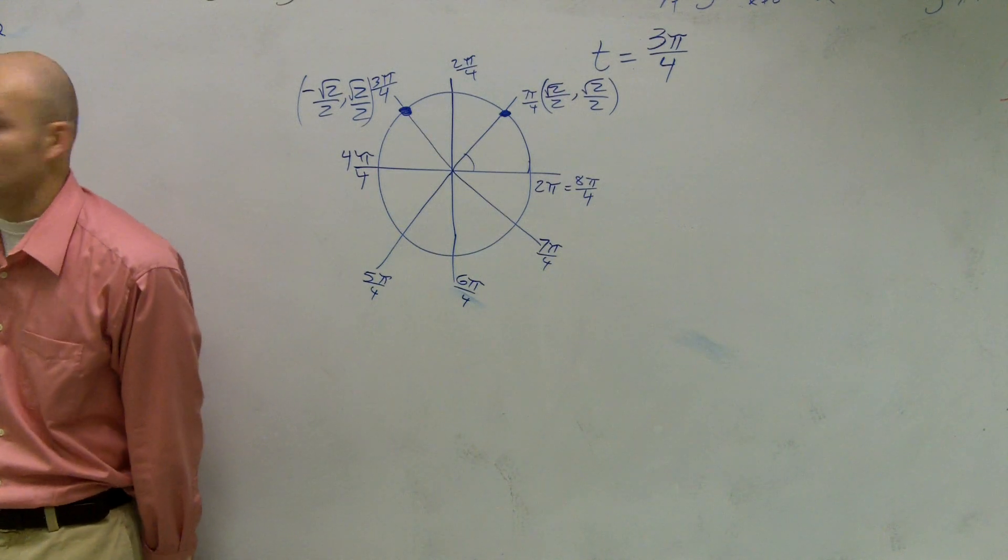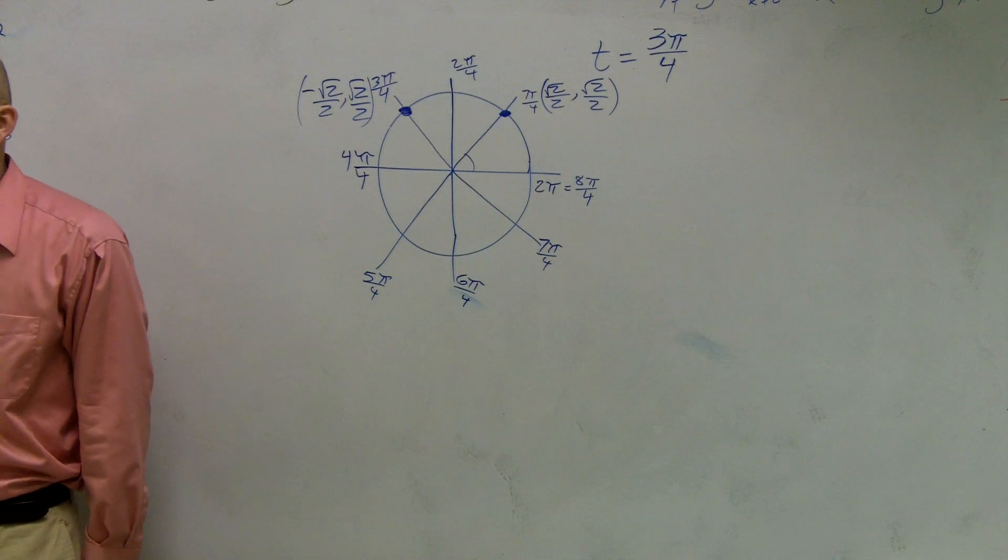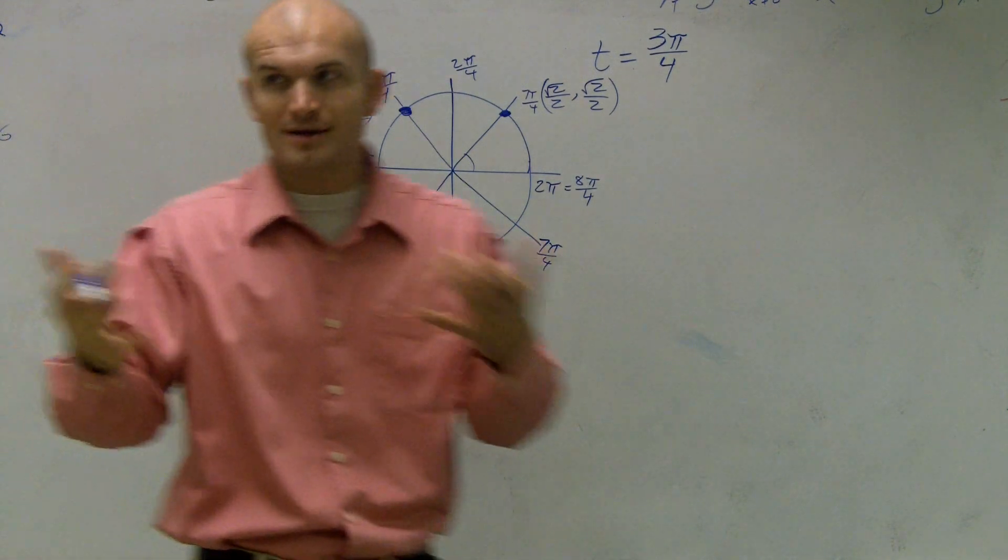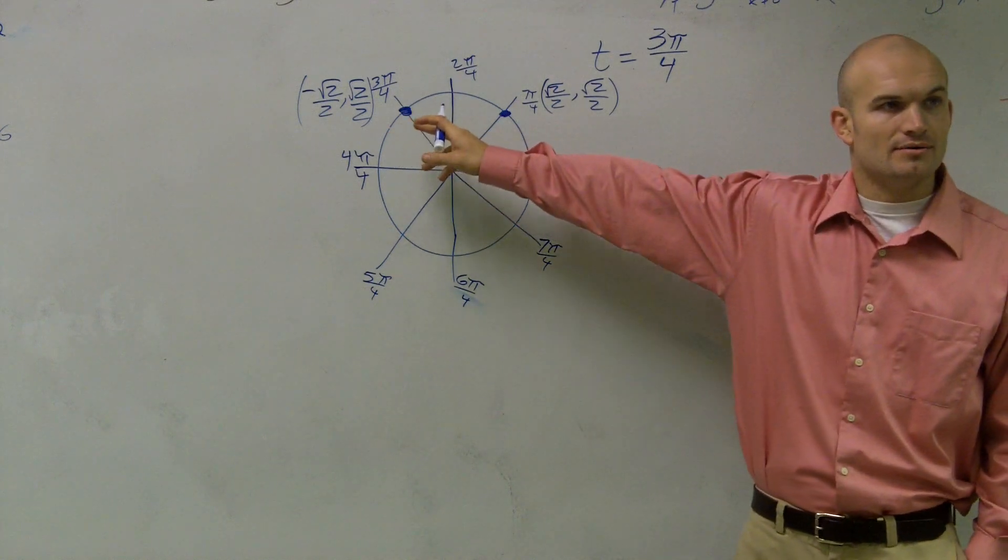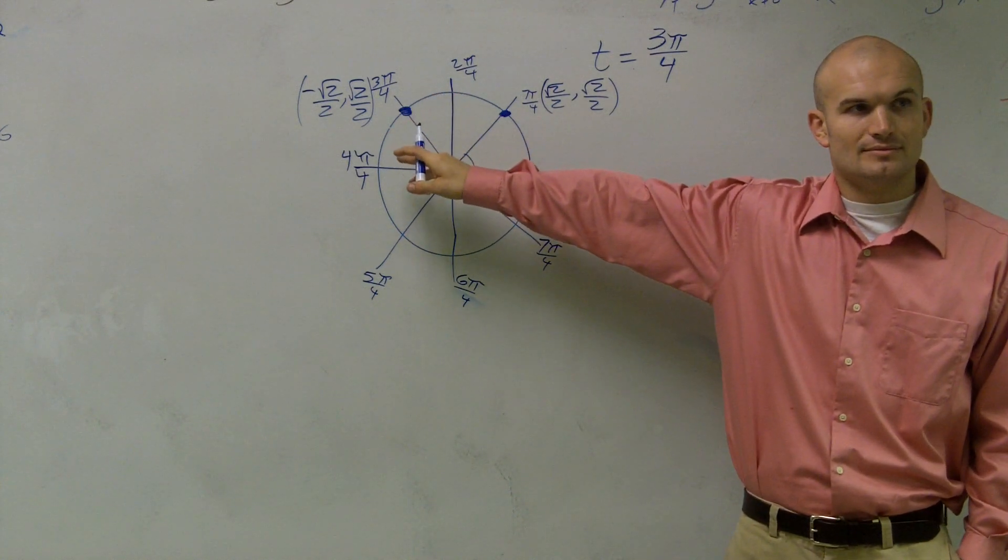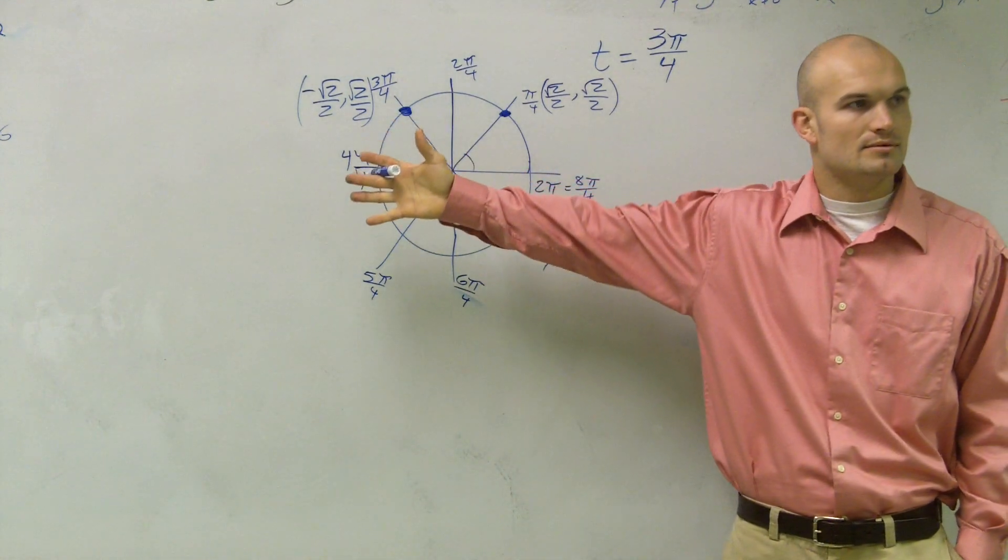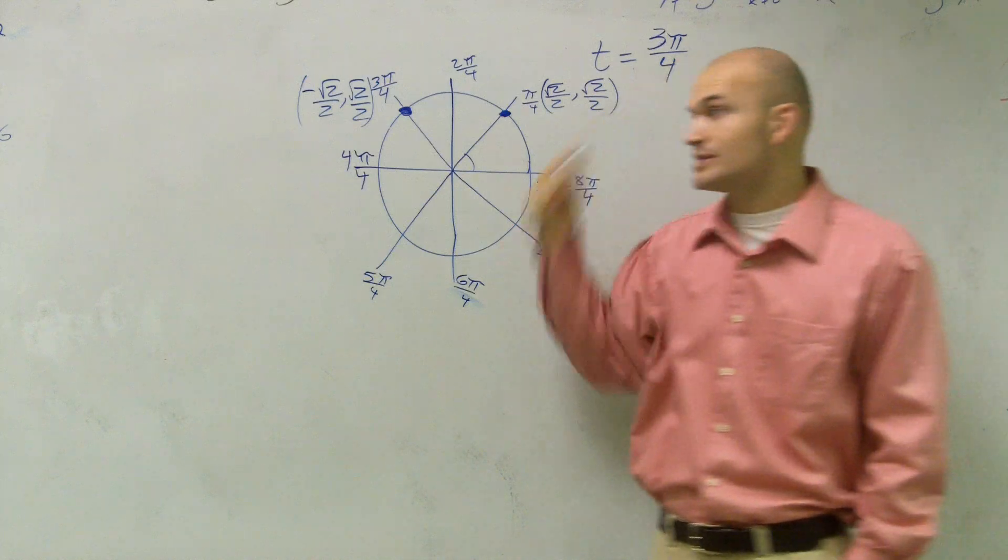If you guys don't know how I got the square root of 2 over 2, I have the proof over here that I did. Are we good here, though? At this point, are we good? Okay, because this is the most basic thing. You guys have to be able to find the point. You have to be able to find the point. So now what we need to do is we need to evaluate our six trig functions.